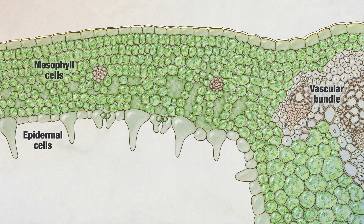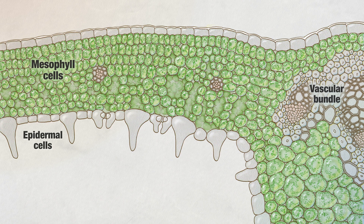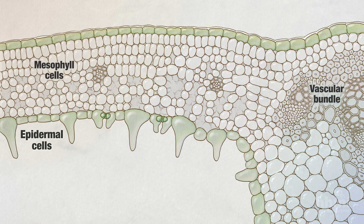A leaf has many different types of cells, such as mesophyll cells, epidermal cells, and vascular bundles.